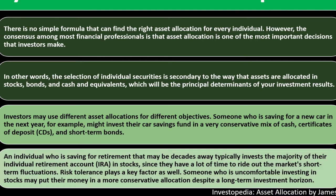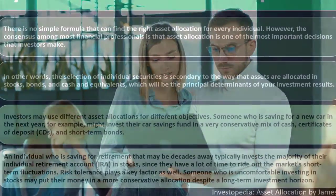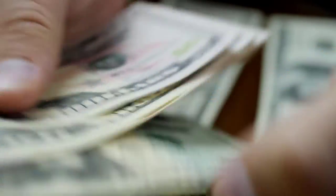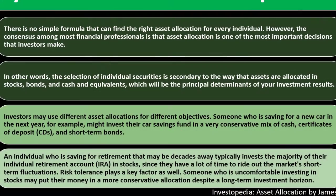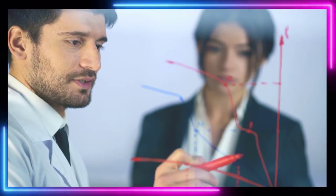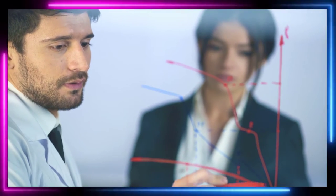With a longer time horizon, we might use more volatile investment tools, hoping for a higher long-term return. An individual saving for retirement decades away typically invests the majority of their IRA in stocks, since they have time to ride out short-term market fluctuations. Risk tolerance also plays a key factor — someone uncomfortable with stocks may choose a more conservative allocation even with a long-term investment horizon.